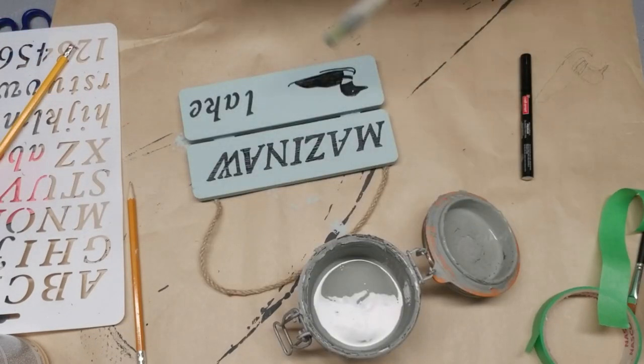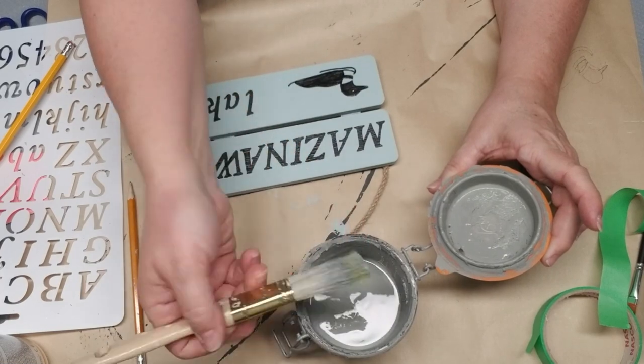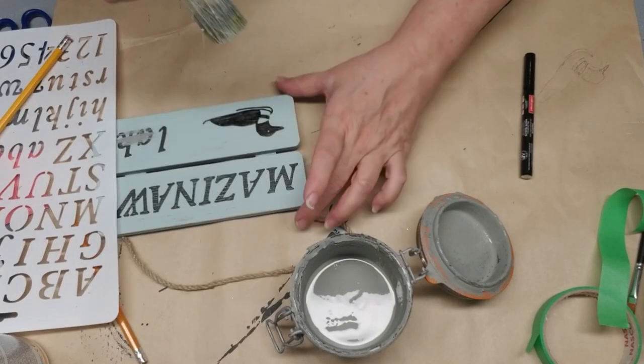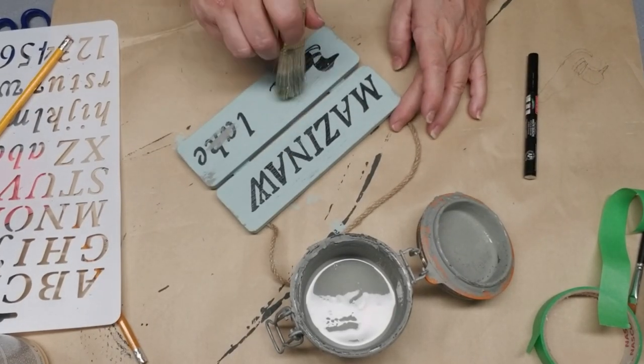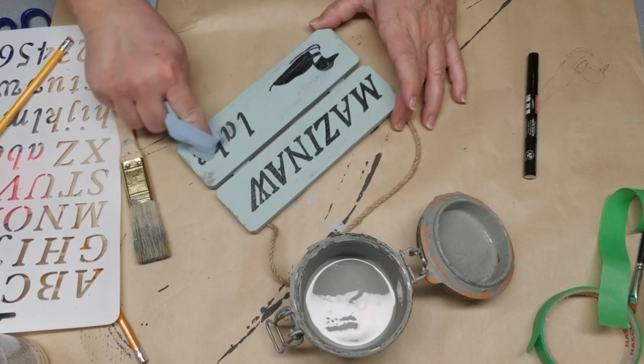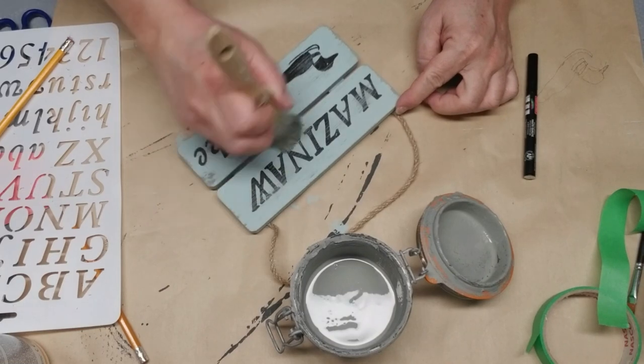I wanted to give this sign a little distressing too, but this time I'm using gray paint and doing my same dry brush technique. Dip it, dab some off, and then run my brush across. I got a little too much on the word lake, but that's an easy fix. I'm just going to take a little rag and wipe some off.